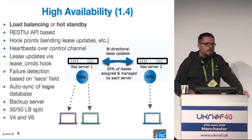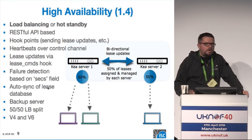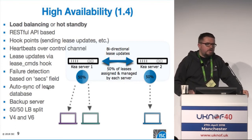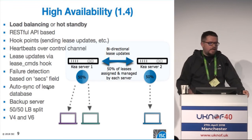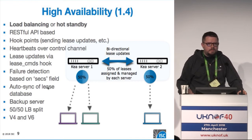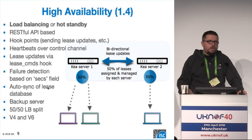We will get Kea 1.4 in May. One of the major features coming up is high availability — this is a rough replacement for DHCP failover. It's not working exactly like that, it's slightly different, but it covers all the major features. You can do load balancing with it or use a hot standby. The communication between partners is done over the RESTful API, so it's easy to see what's going on. And of course, as with everything else in Kea, there are hook points, so if you want to tweak something you can ask us to write an extension or write it yourself.